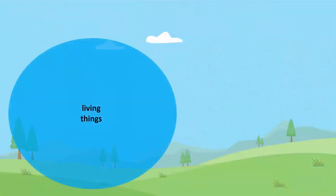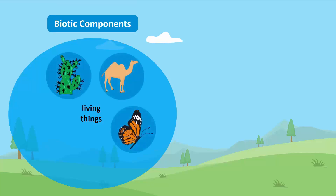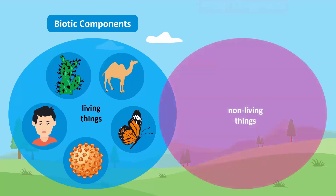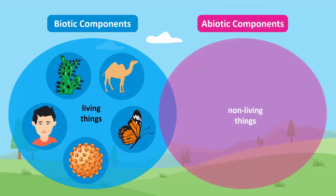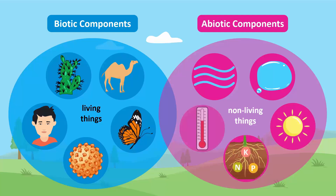Living things in an ecosystem are called biotic components. For example, plants, animals, insects, microorganisms, and even human beings. Non-living things in an ecosystem are called abiotic components. For example, air, water, sunlight, nutrients, and temperature.